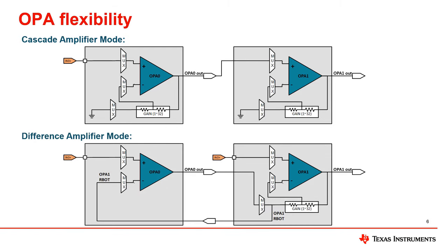The sixth is the difference amplifier mode. With OPA0 as a buffer, the N- of OPA0 is directly connected to the OPA1 bottom resistor, thus avoiding the effects of the MUX native resistance of OPA1 on the final gain.